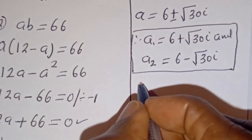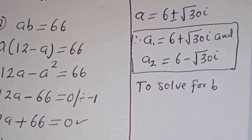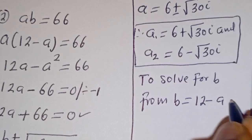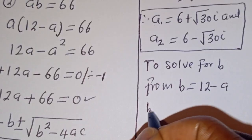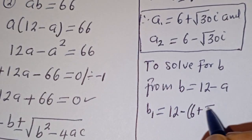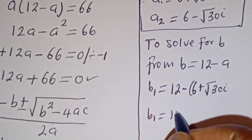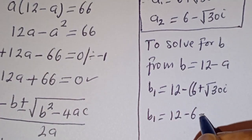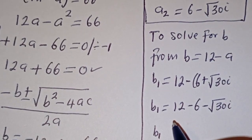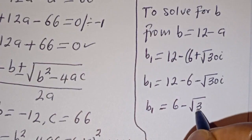Now let's solve for B. To solve for B, from B equals 12 minus A: B1 equals 12 minus A1, which is 12 minus (6 plus square root of 30 i). That gives B1 equals 6 minus square root of 30 i.